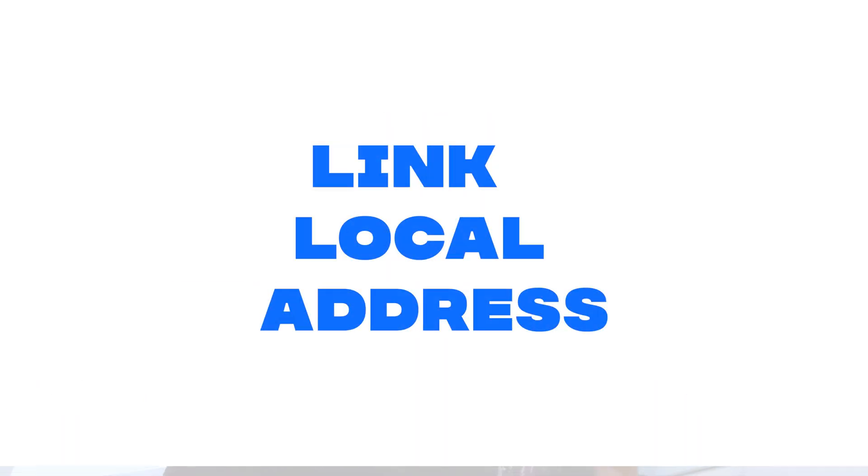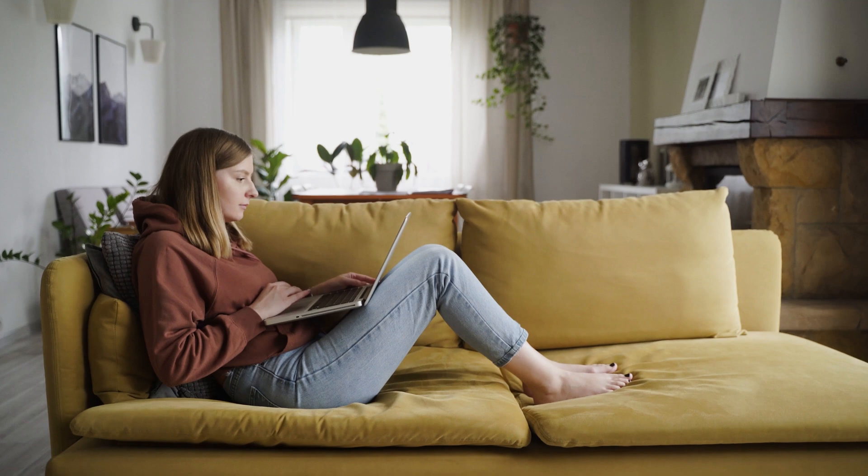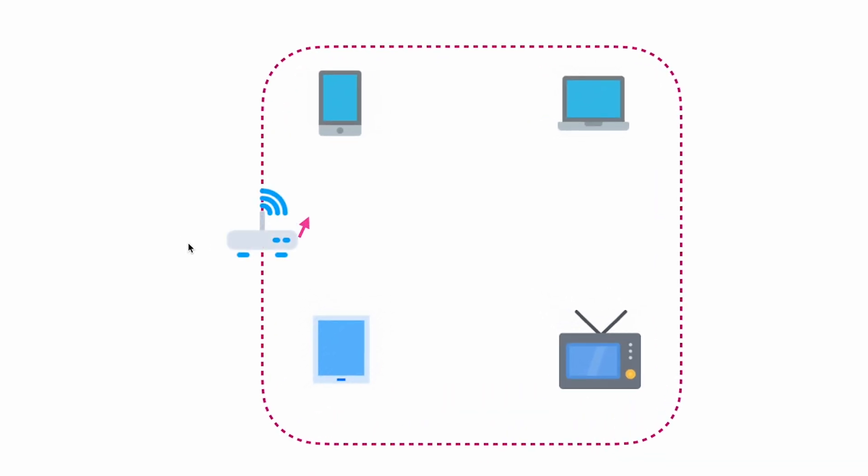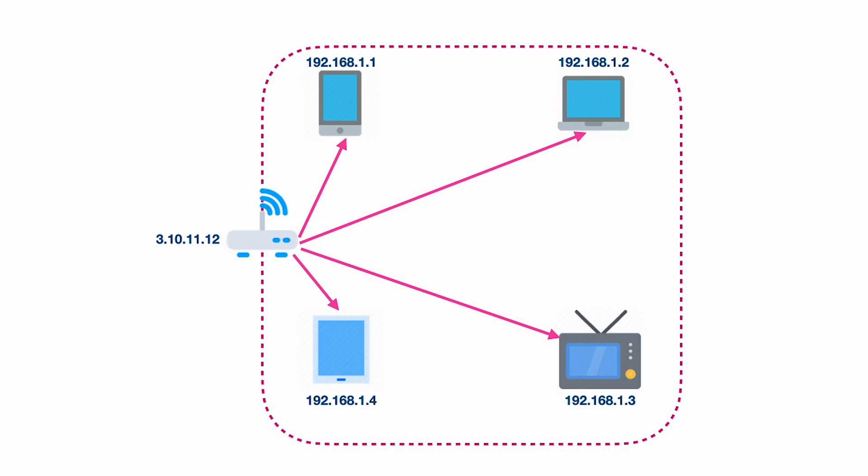Let's talk about the link-local address and why it is important. Nowadays at home you have Wi-Fi devices, and whenever you bring in a new device or mobile phone and connect it to your Wi-Fi, after a successful connection to the router you get an IP address automatically. That automatic generation of an IP address is called a link-local address. The link-local address is responsible for automatically assigning an IP to your device whenever that device appears on the network. That concludes our discussion of IP addresses, and I hope this session helps you understand IPv4 addresses better.